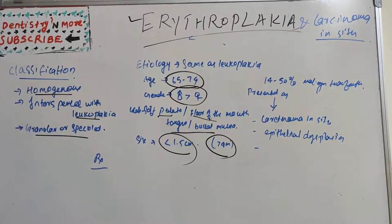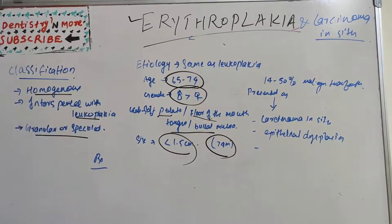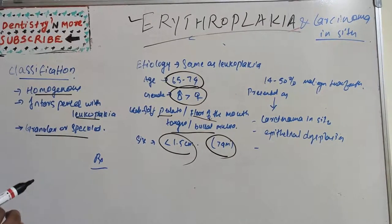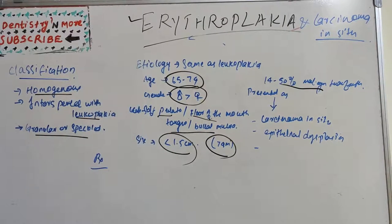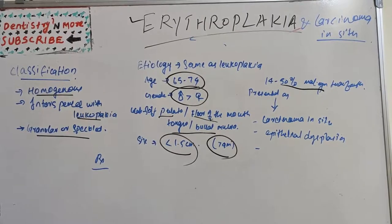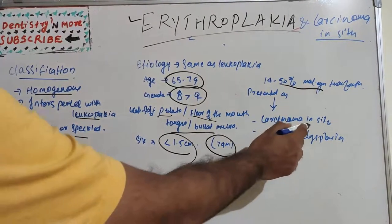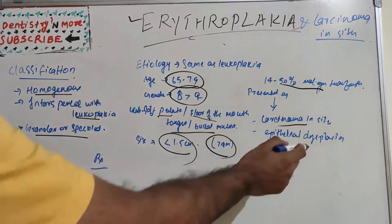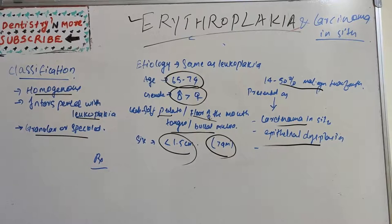It appears as smooth and granular or nodular lesion which is well defined, may be irregular or red granular surface interspersed with white or yellow foci. It will be soft on palpation and has highest risk of malignant transformation, around 14 to 50 percent malignant transformation for erythroplakia. Based on histology, 80 to 90 percent of cases present as carcinoma in situ, severe epithelial dysplasia, and microinvasive carcinoma.